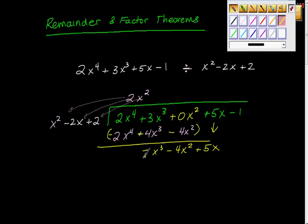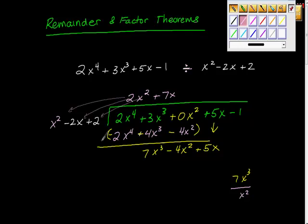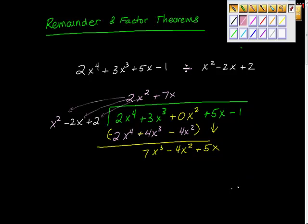So this is a 7x cubed. The next problem: we're going to take this 7x cubed and divide by this x squared. That's where we're getting our next term, and the answer should be 7x. So 7x — that's this piece divided by this one. It's pretty straightforward and simple, but you have to just go with what's happening here.